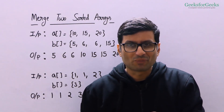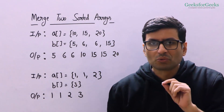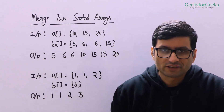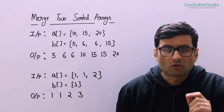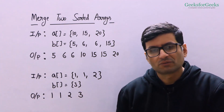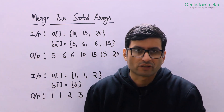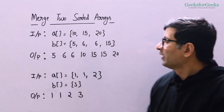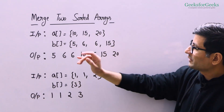Let us talk about this problem. We are given two sorted arrays. We need to print all the elements of both the arrays in sorted order. Let's understand the problem with these examples.